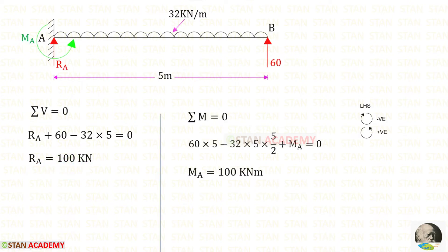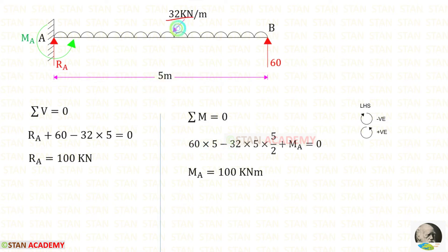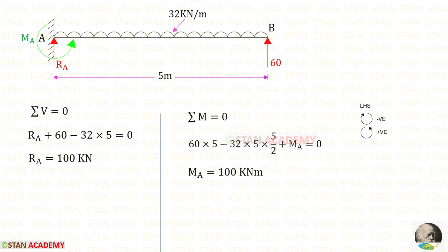Now let us apply the rule ΣM = 0 and find Ma. Taking moments about A, moving towards the left-hand side — clockwise is negative and anti-clockwise is positive. Rb acting anti-clockwise is positive, distance is 5. The UDL acting clockwise is negative; we multiply by 5 × 5/2. Assuming Ma acts in the anti-clockwise direction, it is positive. Finally, Ma = 100 kNm.